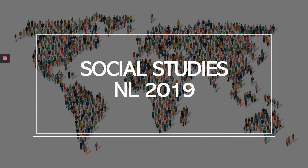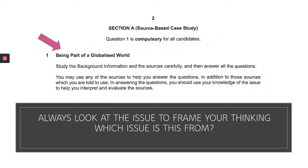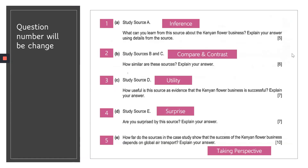Today we're looking at the Social Studies O-Level 2019 paper. Always look at the issue to frame your thinking — this question is from Issue 3, Globalization. Note that in the 2020 SS paper the question numbers will be changed to one, two, three, four, and five instead of the usual A, B, C, D, and E from your ten-year series.